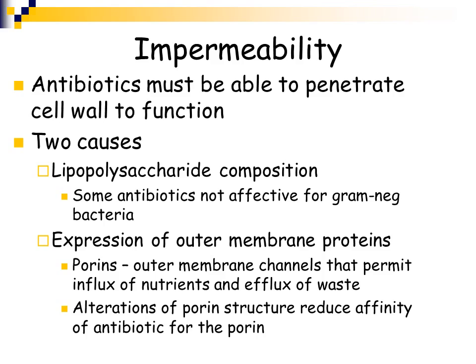Some bacteria will make porins — little channels that take nutrients into the cell and take waste out. If these bacteria are able to alter their porin structure, then there is a reduced affinity for the antimicrobial agent, so that antimicrobial agent can't get into the cell.